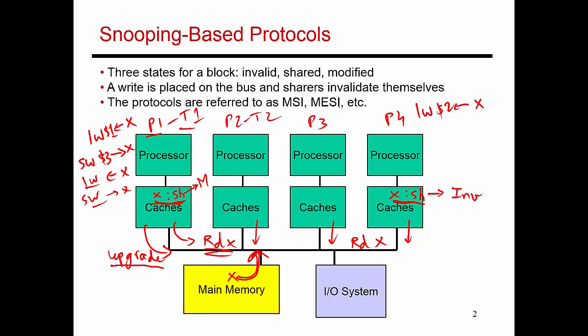Any one of these other processors could do a load of X into some register. They look up their cache, don't find the data in their cache or find the data in invalid state, and that triggers a cache miss. So they place a request on the bus saying they're trying to read X. All the other caches look up to see if they have a copy of X, and P1 realizes that it does have a copy of X.